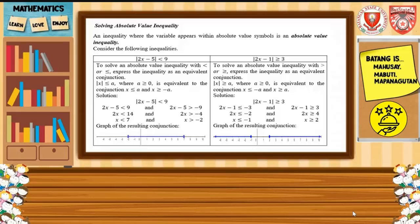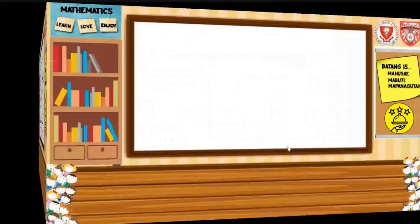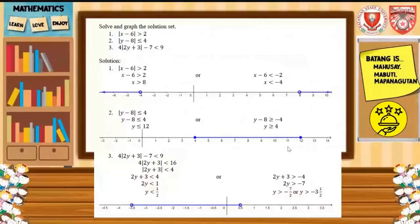Here is the solution of the absolute value of 2x minus 1 is greater than or equal to 3. The graph of the resulting conjunction is shown in the graph below. The graph of the absolute value of 2x minus 1 is greater than or equal to 3. And now let us have an example.